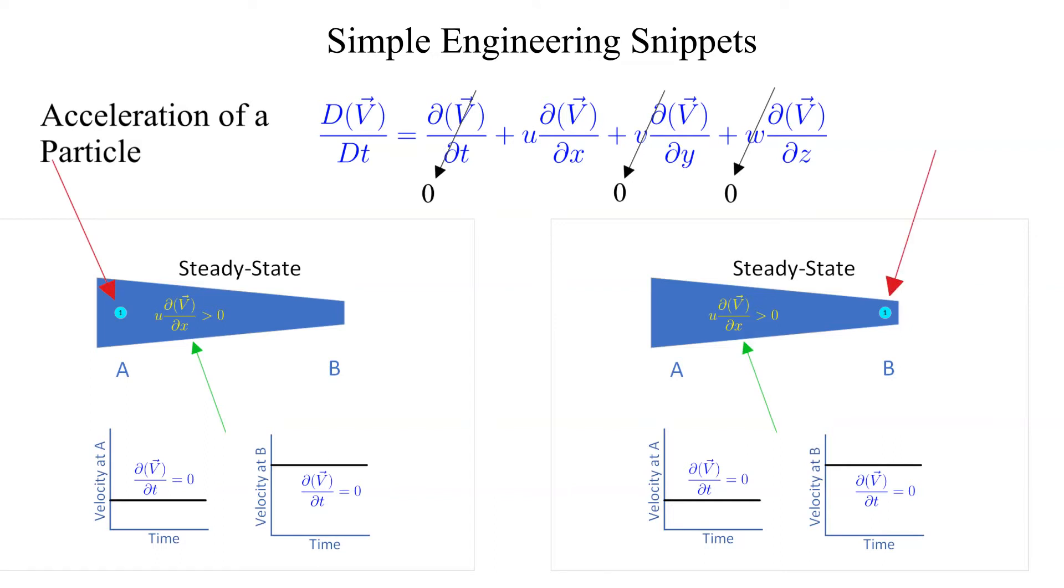The particle undergoes a transient change in velocity, but this is still steady flow. The definition of steady state is that the partial derivative with respect to time for the flow field, or the local time derivative, is equal to zero.